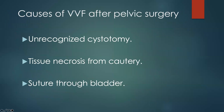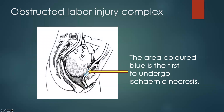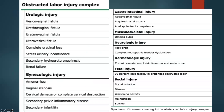Causes of VVF after pelvic surgery include unrecognized cystotomy — an unrecognized bladder injury — tissue necrosis from cautery injury, or sutures placed through the bladder. The obstructed labor injury complex should be understood as not only obstetric VVF, but a total obstetric labor injury complex. The area involved usually includes the trigone, bladder neck, and proximal urethra, which are the first to undergo ischemic necrosis. There is an entire spectrum: vesicovaginal fistula, urethrovaginal fistula, and utero-vesical fistula, plus complete urethral loss, stress urinary incontinence, secondary hydronephrosis, and renal failure.